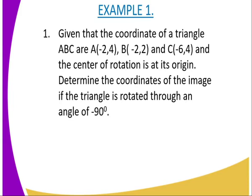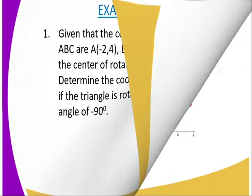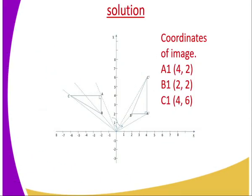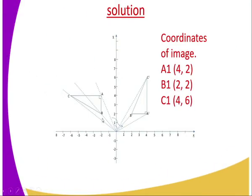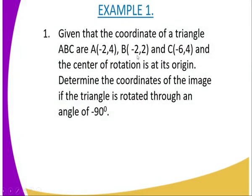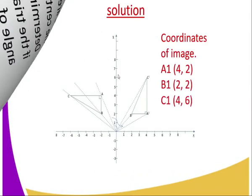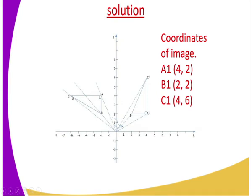Therefore, as already instructed, you are supposed to measure the angle in clockwise direction. On this Cartesian plane diagram, the object point A is at (−2, 4) — as given in the question — point B is at (−2, 2), and point C is at (−6, 4). You are supposed to join coordinate A of the object to the center of rotation, which in this case is at (0, 0).